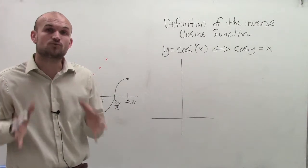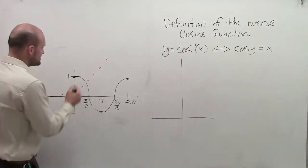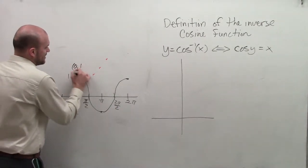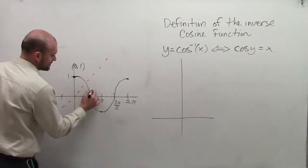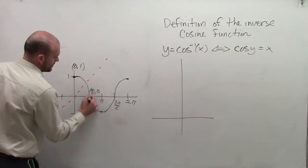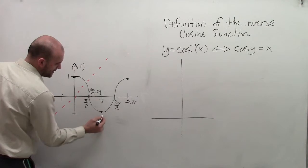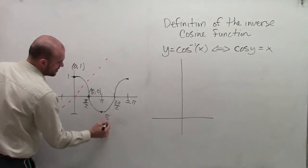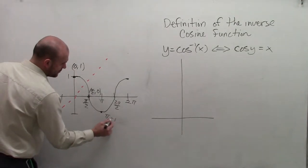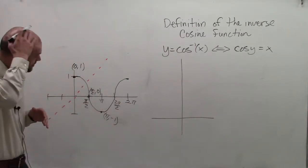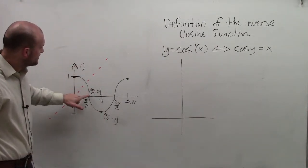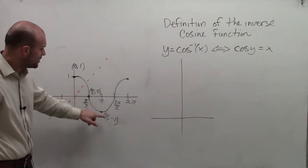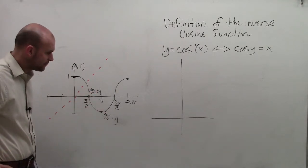Let's take a look at a couple coordinates that we have here on this graph. There are three important points that I want to look at. First is 0 comma 1. Next one is π/2 comma 0, and then at π comma -1.